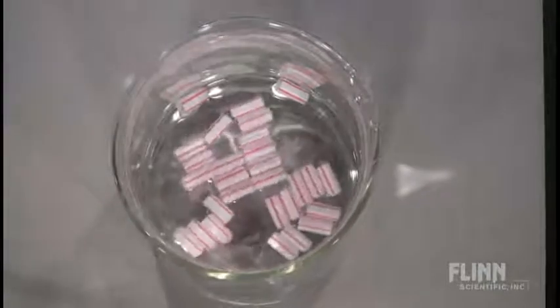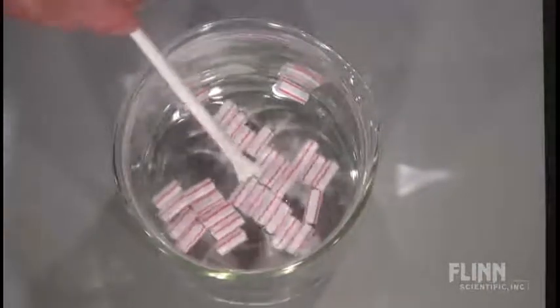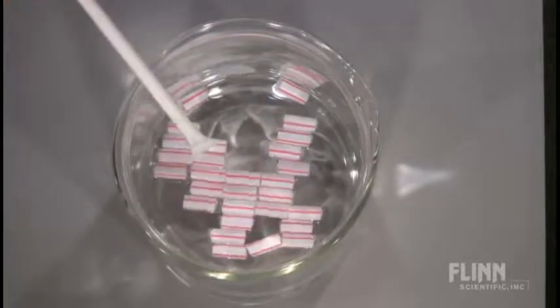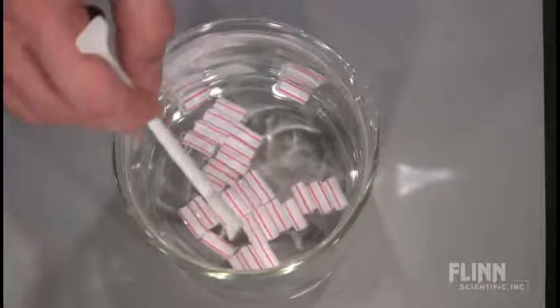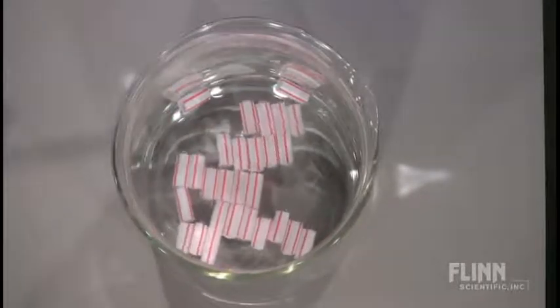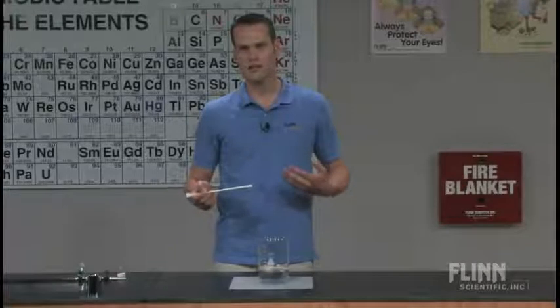Rather than going in a haphazard form, you notice that you get regions where the flat sides of the straw just start to spontaneously line up with each other. And the ends of the straws also spontaneously start to line up with each other. So this is an assembly that's happening between straws spontaneously.